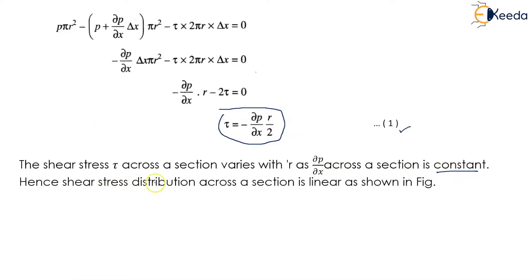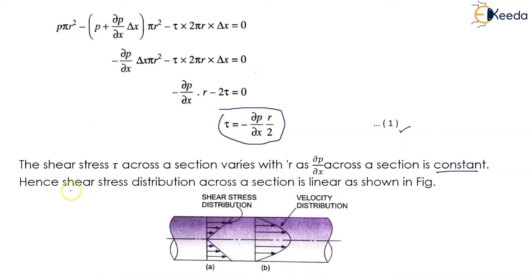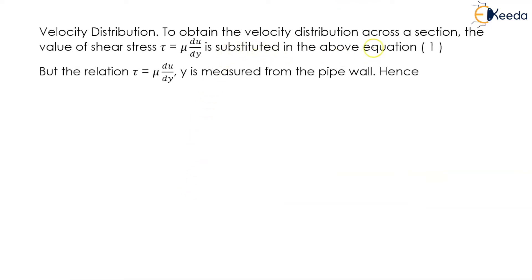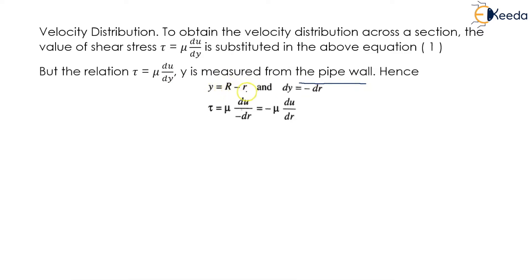The shear stress tau across a section varies with the radius, since del p upon del x across a section is constant. Hence the shear stress distribution across a section is linear as shown in the figure — figure A shows the shear stress distribution. To obtain the velocity distribution across a section, the value of shear stress tau equal to mu du upon dy is substituted in equation 1. Since y is measured from the pipe wall, y equals R minus r and dy equals minus dr, so tau becomes minus mu into du upon dr.